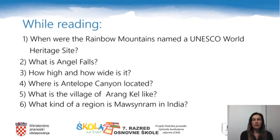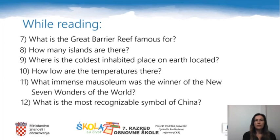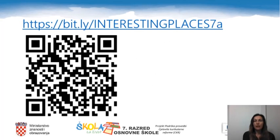When were the Rainbow Mountains named a UNESCO World Heritage Site? What is Angel Falls? How high and how wide is it? Where is Antelope Canyon located? What is the village of Arankel like? What kind of region is Mawsynram in India? What is the Great Barrier Reef famous for? How many islands are there? Where is the coldest inhabited place on earth located? How low are the temperatures there? What immense mausoleum was the winner of the new Seven Wonders of the World? What is the most recognizable symbol of China? Now copy the following link into your web browser or scan the QR code — it will direct you to a page where you have to read the text. It is actually a video with subtitles, but the video will be automatically paused at places where you have to answer a question. Good luck with your task.